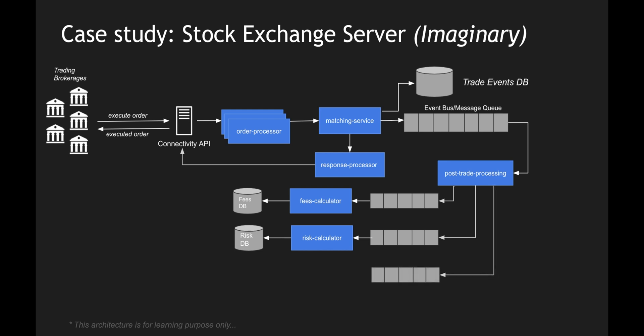It also publishes another message — the trades message — which we call end-of-day trades. We get all the current day trades and publish them into a separate Kafka topic so they can be persisted into a separate database that holds only current day trades. This database will have all trades executed for a particular day and will be refreshed every single day. In addition, post-trade processing also sends messages to the clearing and settlement platform.